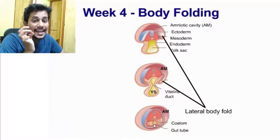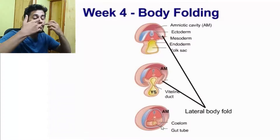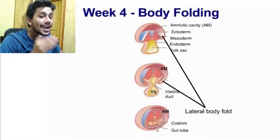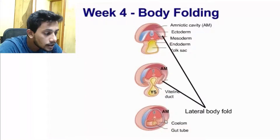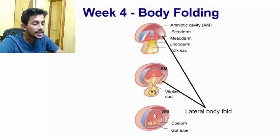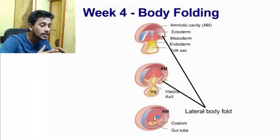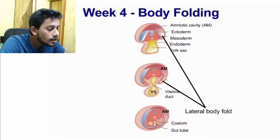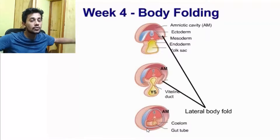Once the folding is complete, the endoderm closes off into a circular tube — this is now called the gut tube, running from the mouth to the cloaca. That's the endoderm — the epithelial lining we studied. Outside it is the ectoderm as another tube, with the mesoderm in between. So ectoderm is the outermost layer (skin), mesoderm is in between (muscles and connective tissue), and in the center is the endoderm (gut tube). Surrounding all of this is the amniotic cavity.